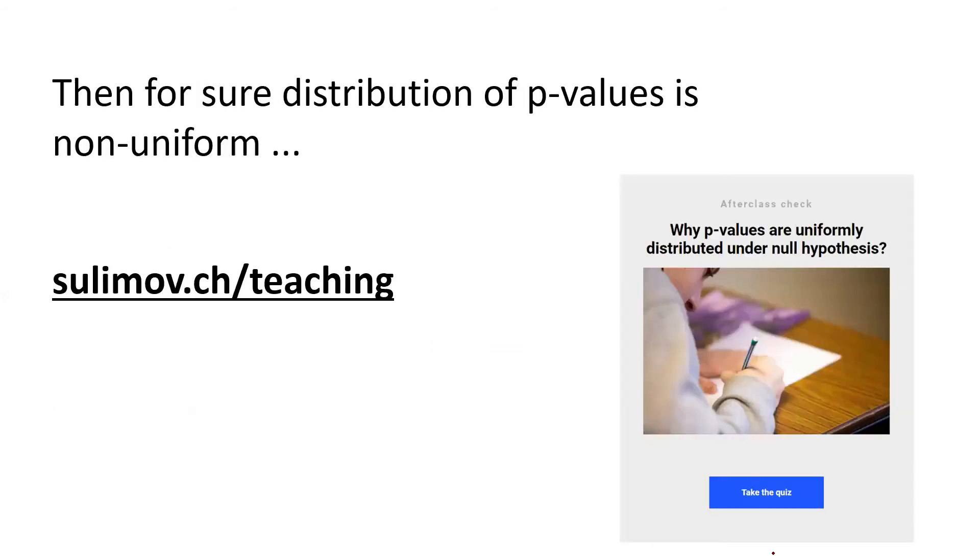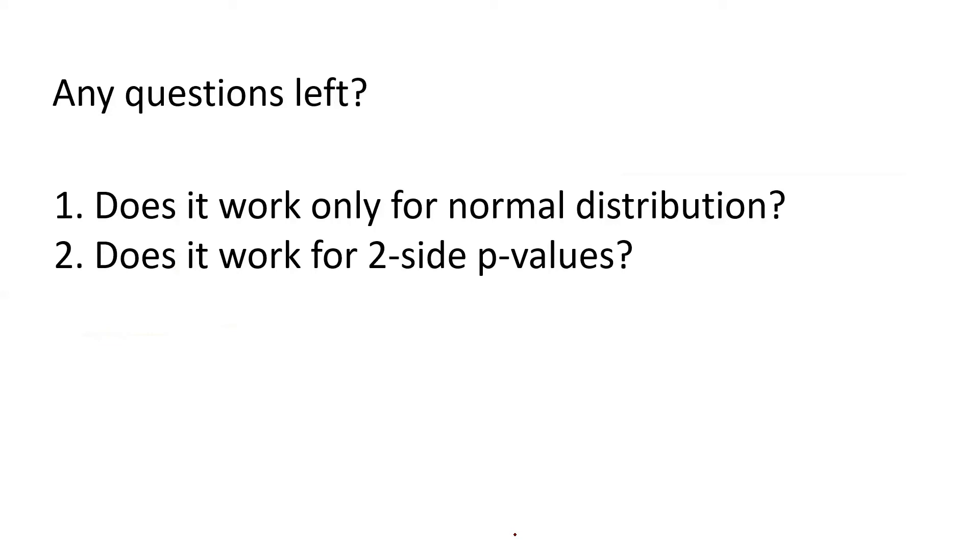So I can tell you one thing, that for sure, it would be non-uniform, but which one it would be, and how to measure it, I suggest you to check up this link. So here you would find this lovely quiz about the topic, why p-values are uniformly distributed under null hypothesis. And I think that there are still a couple of questions left.